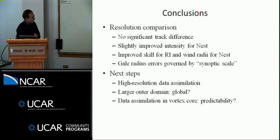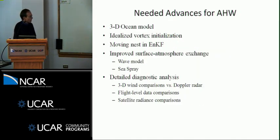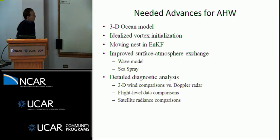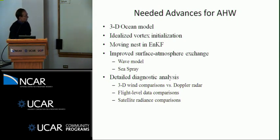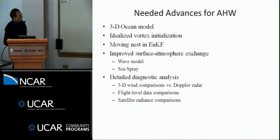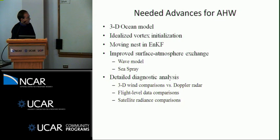Something raised this morning is the predictability question of how much we get out of data assimilation in the vortex core — we don't really know how long that improved information will last. Needed advances for the Advanced Hurricane WRF include the 3D ocean model, idealized vortex initialization, moving nests in the ensemble framework, and improved surface-atmosphere exchange. Lastly, I want to emphasize the detailed diagnostic analysis that Naomi was talking about. There's so much data out there, and getting started using it to do full three-dimensional comparisons of these storms is an important challenge, but necessary to understand where errors are coming from. That's all. Thank you.